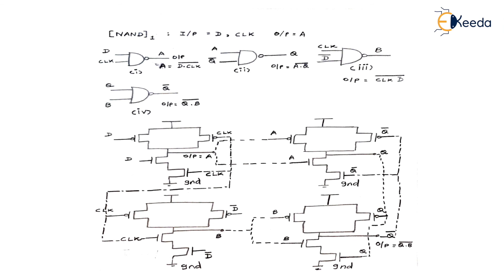For dynamic CMOS, just have a pull-down network, remove the pull-up network, and add two clocks. For pseudo-NMOS, remove the pull-up network and use a single PMOS with the gate grounded. That completes all the design styles. Go for static CMOS style, as it is much simpler once you know how to connect a NAND gate or NOR gate. This is all about the 1-bit shift register. In the next video, we will see some numerical problems. Thank you.